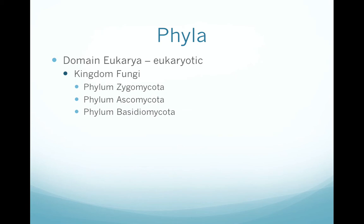Within Kingdom Fungi there are three phyla to know. Phylum Zygomycota contains the bread molds and is identified through the production of a structure called a zygospore that allows sexual reproduction to occur. Phylum Ascomycota contains the fungi that produce spores in sacs on the tips of their hyphae, and Phylum Basidiomycota contains the fungi that produce spores through specialized club-shaped appendages on the tips of their hyphae.